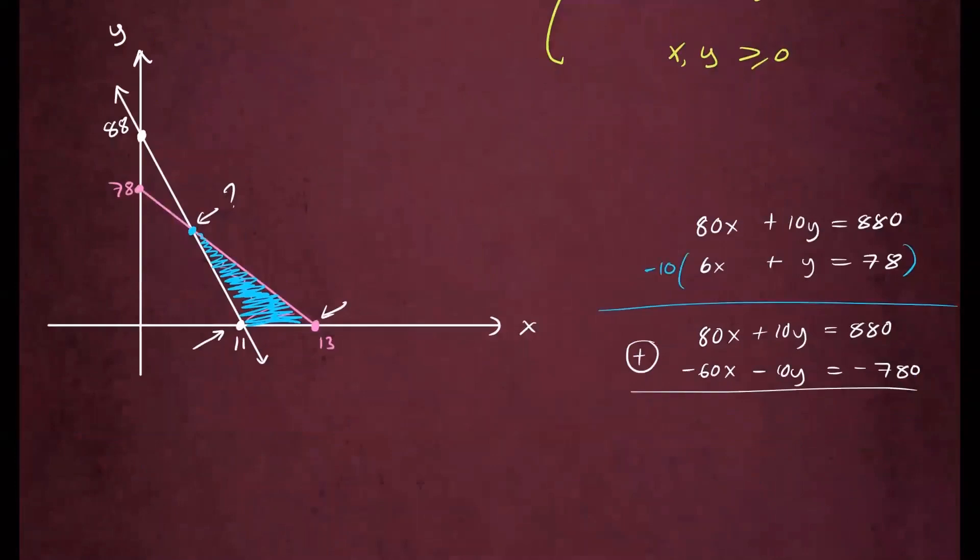So if you add them up, you have 80x minus 60x, that's 20x. The y will cancel. And then 880 minus 780, that will be 100. Divide both sides by 20, x equals 5.